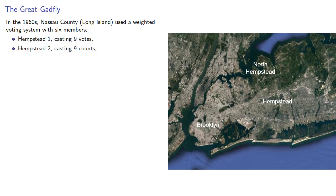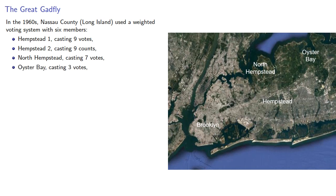North Hempstead, also a large town, cast seven votes. The town of Oyster Bay, much smaller, three votes. Glen Cove, smaller still, one vote, and Long Beach, casting one vote.